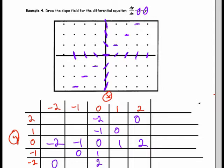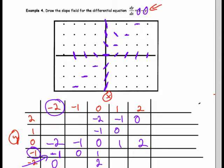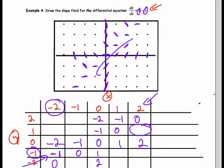At the point (1, 2): x minus y gives 1 minus 2, a slope of negative 1. Looking at the table, I notice slopes of negative 1 appear along an entire diagonal. Testing (negative 2, negative 1): negative 2 minus negative 1 is indeed negative 1 — the pattern holds. Similarly, along another diagonal, I expect slopes of 1 everywhere. Testing (2, 1): 2 minus 1 equals 1, confirming a slope of 1. You can use patterns like these to fill in many of the missing slopes and slowly build the slope field.